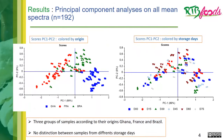The first thing we did was apply principal component analysis on all 192 mean spectra. In the score plot of PC1 vs. PC2 colored by origin, we can differentiate three groups of samples according to their origin: Ghana, France, and Brazil. In the same score plot colored by storage days, we see no distinction or differentiation between samples from different storage days.